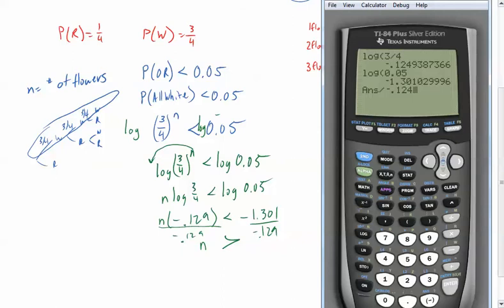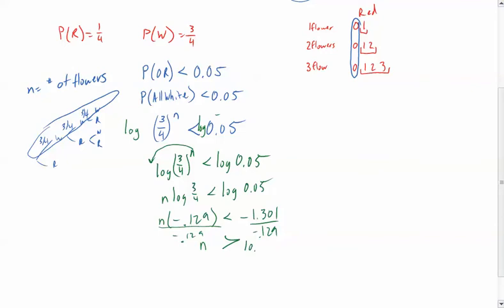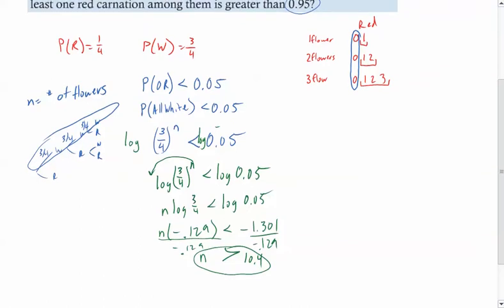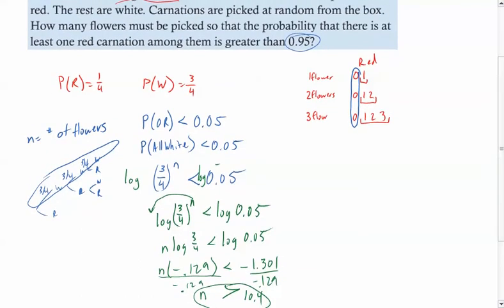And then we say that divided by negative 0.124. And I'm going to go ahead and put the 938 down as well. And I get 10.4. So n is greater than 10.4. So therefore, I have to have more than 10.4 flowers, which means the answer to my question is that I need 11 flowers.